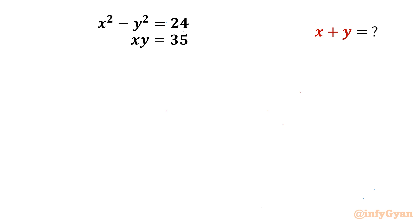Welcome back to Infigr, my dear friends. In today's video we have one very interesting and challenging question from Math Olympiads. The equations are x squared minus y squared equals 24, and xy equals 35. We have to evaluate x plus y.